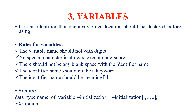The next one is variables. Variables are the same as identifiers — they denote a storage location and must be declared before using. There are certain rules for variables: we should not use any digits at the start; no special characters are used except underscores; we should not leave any space between the names; the name should not be a keyword; and the name should be meaningful. For example, int a, b.